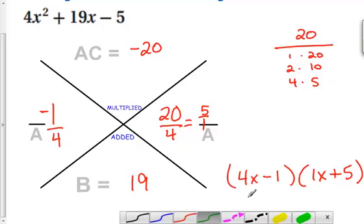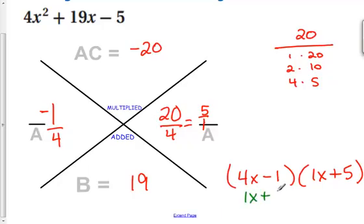It's the same value if I said 1x plus 5 times 4x minus 1. These are the same. They're just interchangeable when you're multiplying. So hopefully this helps you. Answer the 5 example questions that are going to be coming up.